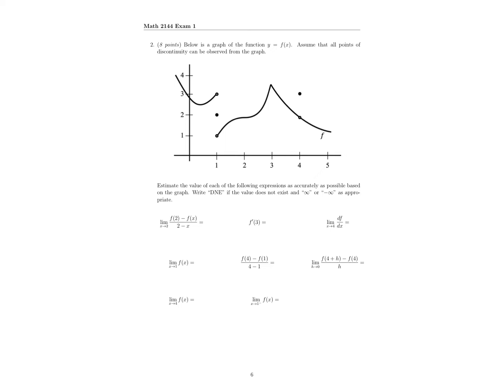Alright, on to question 2. We have this graph with a few discontinuous points, and we have these values that we want to evaluate. So let's just go one by one. We have the limit as x approaches 2 of f of 2 minus f of x over 2 minus x.